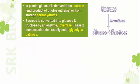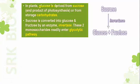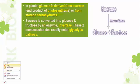Now let us move to the details of glycolysis — how it takes place. In plants, glucose is derived from sucrose, which is the end product of photosynthesis, and from storage carbohydrates such as starch. Glucose is a monosaccharide and sucrose is a disaccharide.